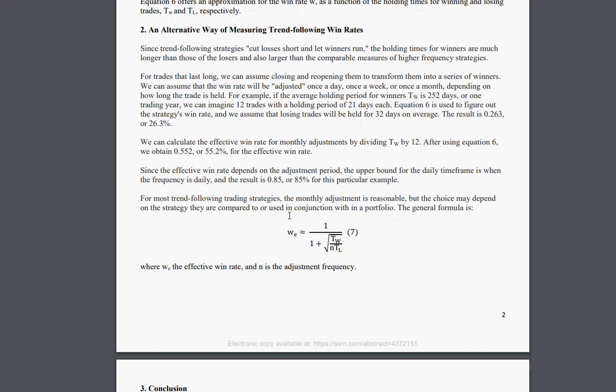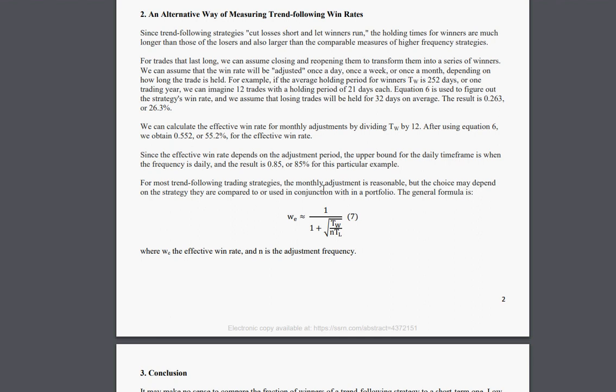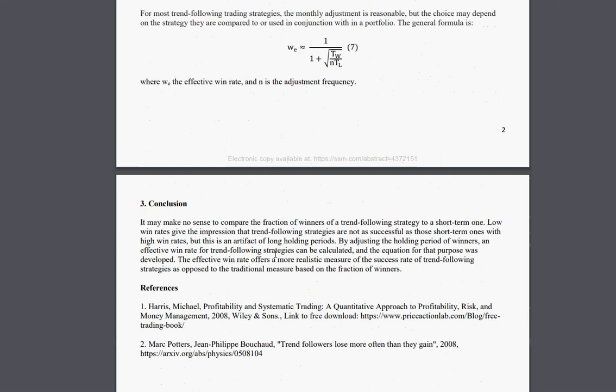A rebalancing every month is reasonable. If we rebalance daily, we get a win rate of 85 percent, but this is not a reasonable rebalancing. We need something that makes sense, and in this case monthly is more appropriate for this type of effective win rate calculation. So this effective win rate gives us another metric that we can use along with many other metrics to judge the performance of strategies we use for trend following.